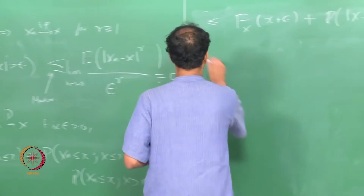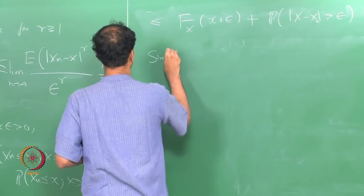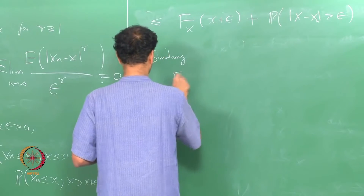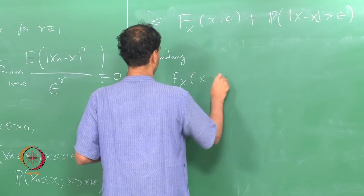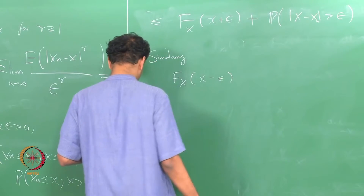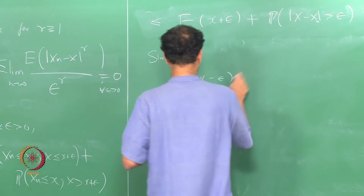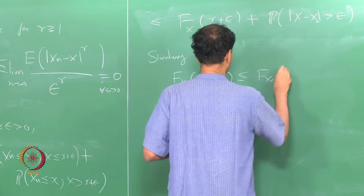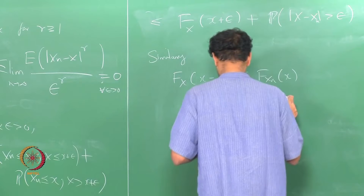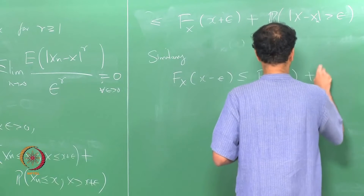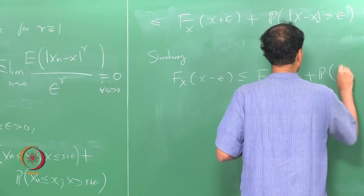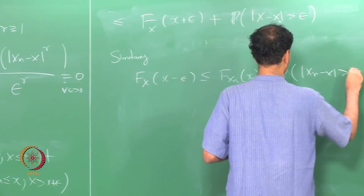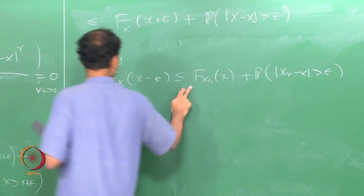A similar argument, if you do it for the minus epsilon part, you will get F_X(X minus epsilon) is less than or equal to F_{X_n}(X) plus the probability that |X_n minus X| > epsilon. This is a very similar argument.